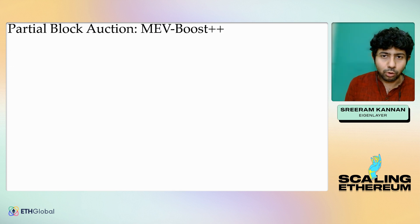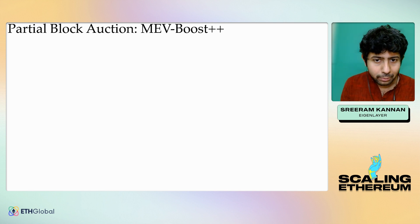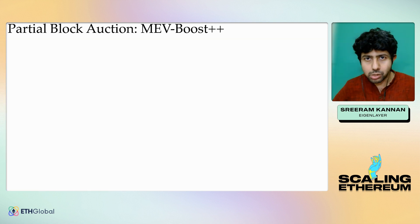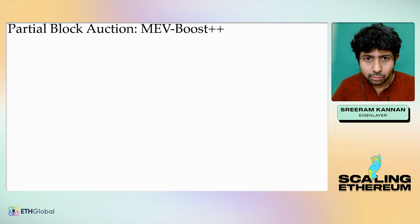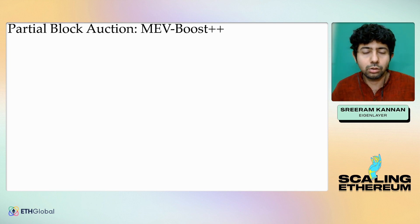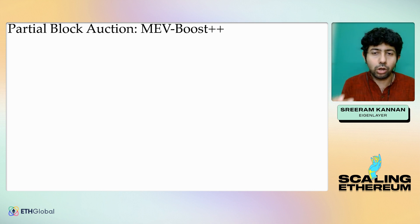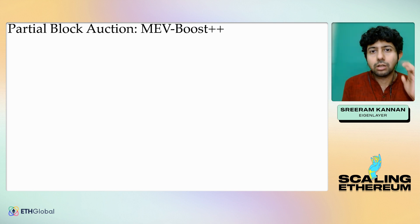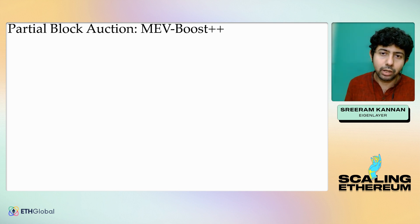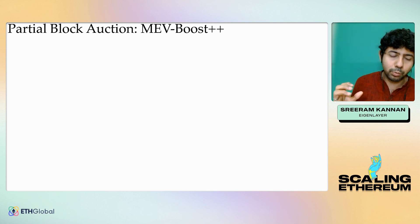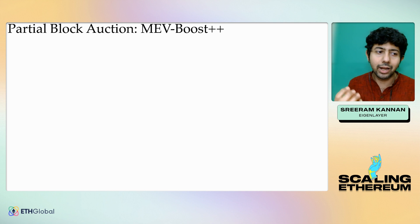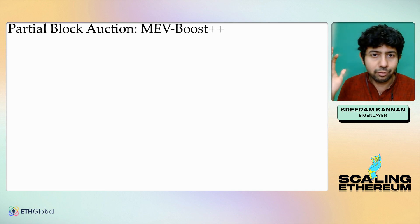Another example is partial block auctions, which we also call MEV Boost++. The core idea is that MEV Boost is a mechanism to sell your entire block to a block builder. Instead, we can think about whether it's possible to sell only portions of the block to the block builder. The main reason only the entire block is sold in MEV Boost today is that if a block proposer double-signs a block header, they get slashed. By committing to signing a block header, we get a credible commitment that they'll include that entire block.